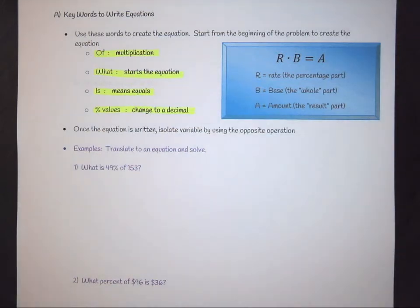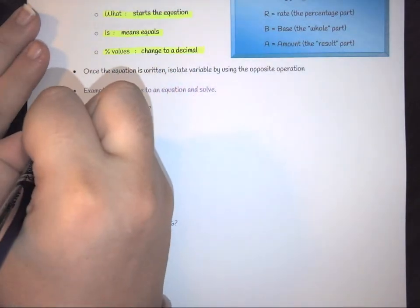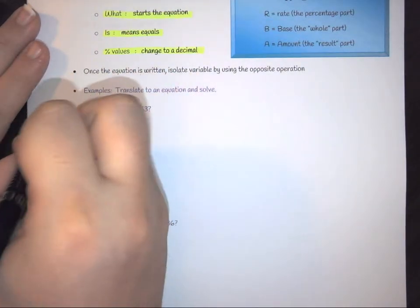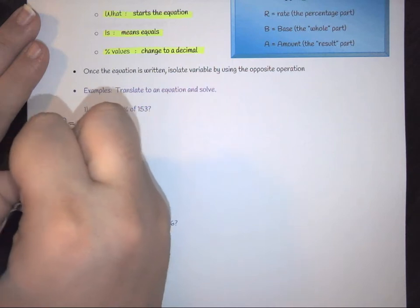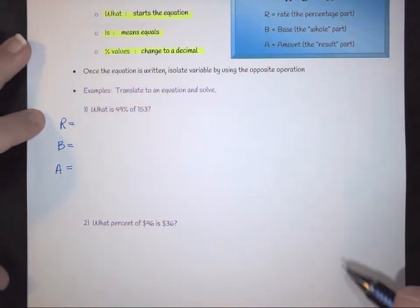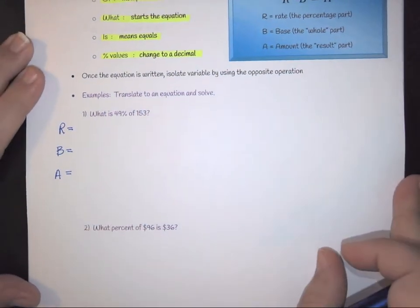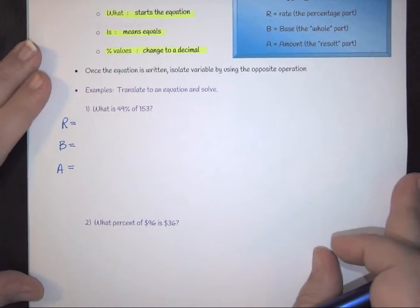So what we have to do is we have to read each sentence and we have to be able to identify what we actually have in the problem versus what's missing. So to start with, we have three terms. We have R, we have the B, and we have the A. And at this point, we don't know what's missing. The question says, what is 49% of 153?